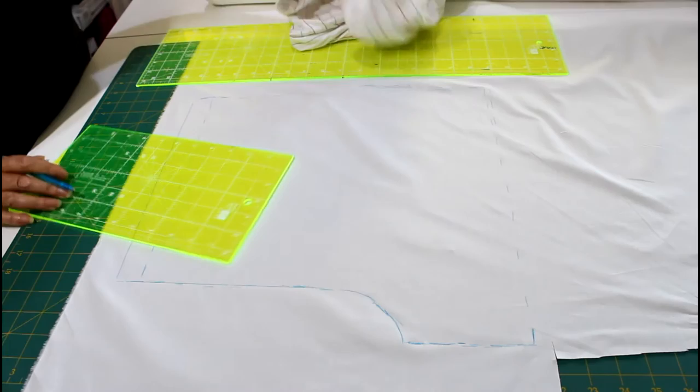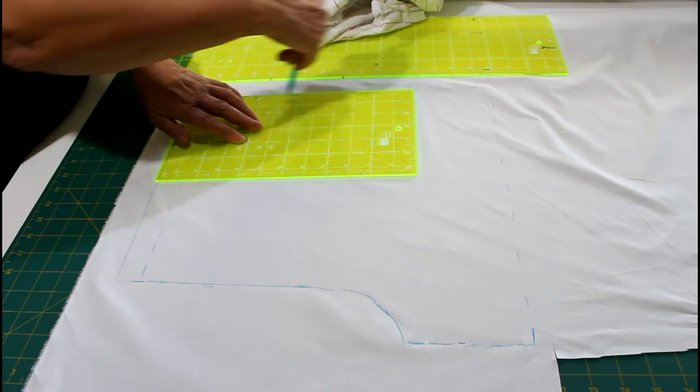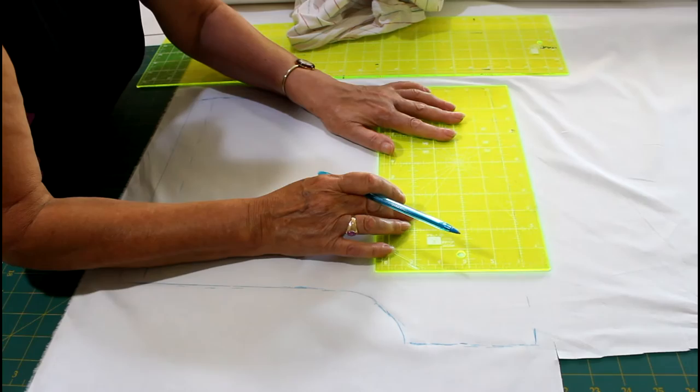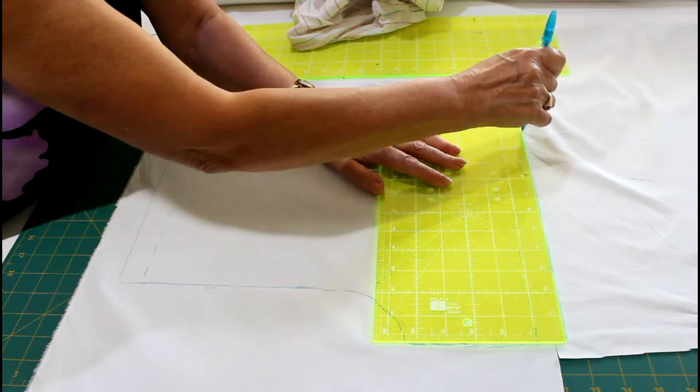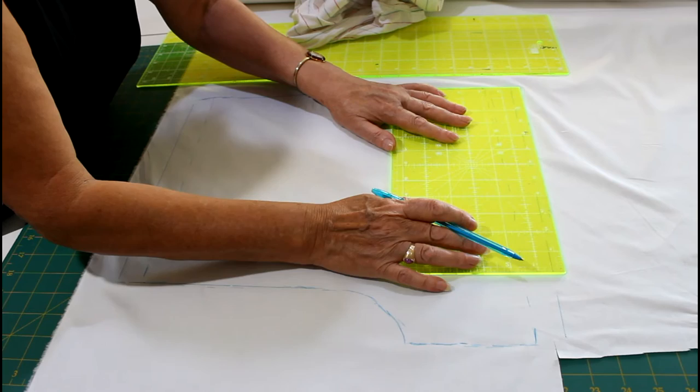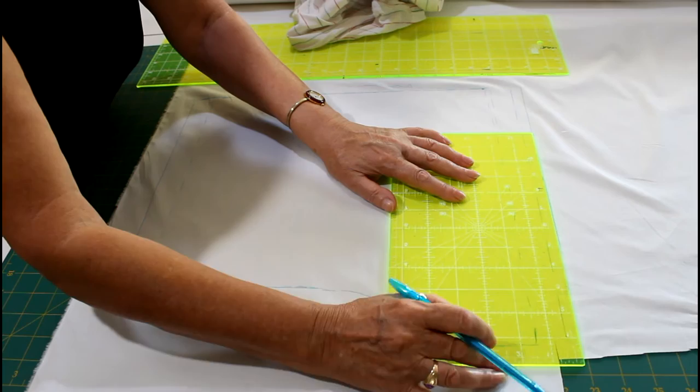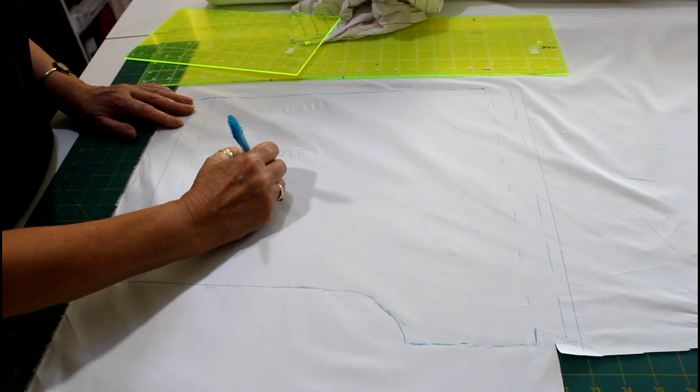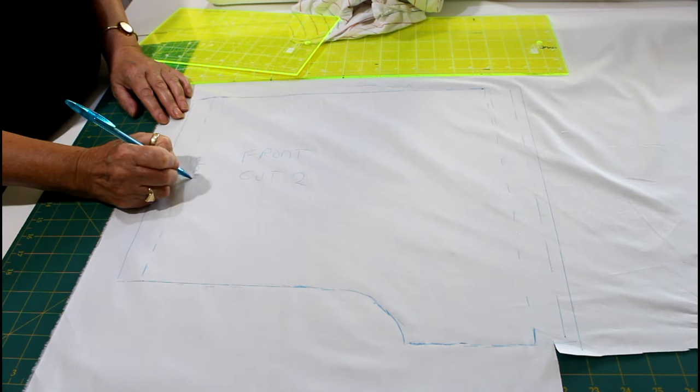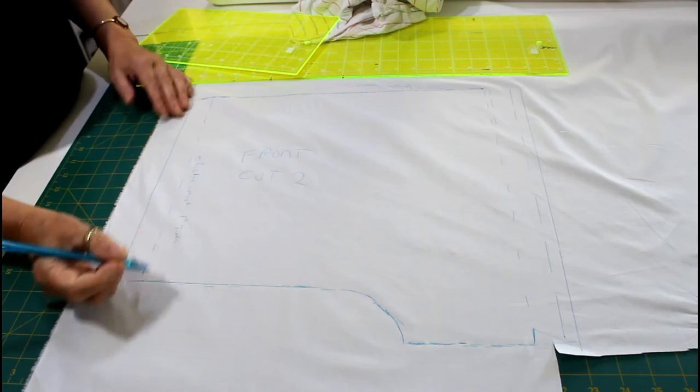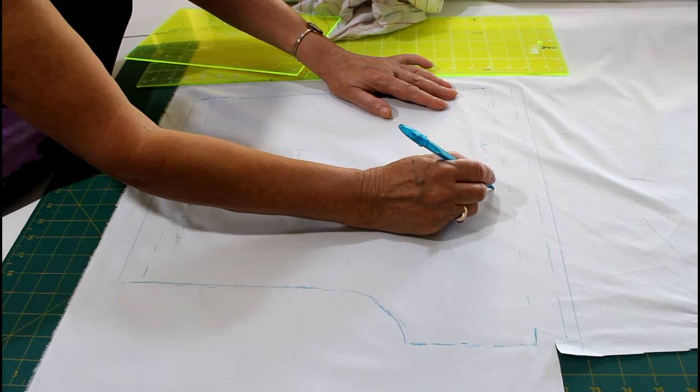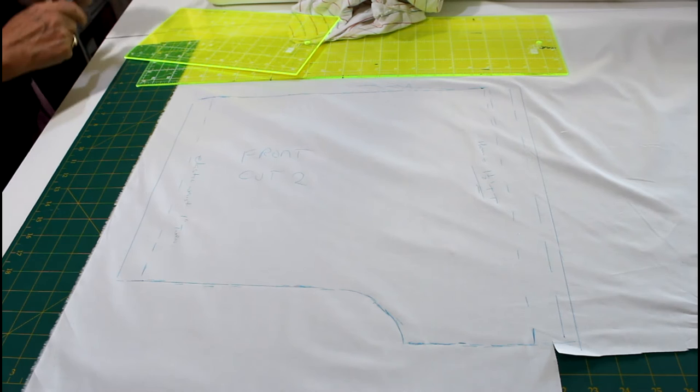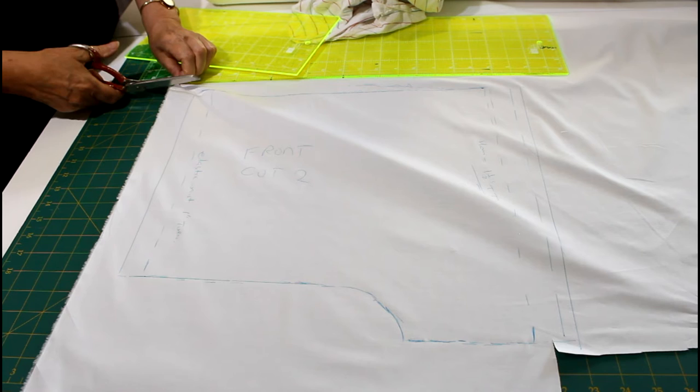And now you can use your ruler to get your lines. So you can see how easy that is. We've got a one and a half inch turned hem, so what I'm going to do is do that. That's the one and there's the half. So this is the front and cut two. There's an elastic waist, one inch turn, and hem equals one and a half inch, what I call the turn twice. Okay, so that's our front done, so we'll cut that.